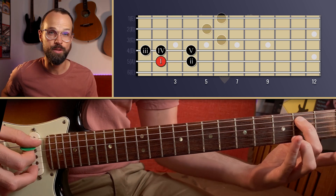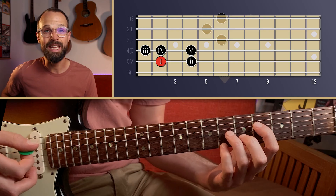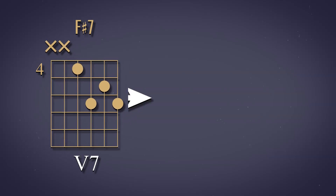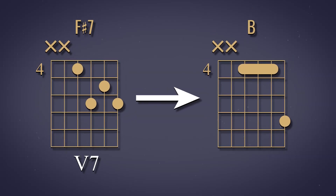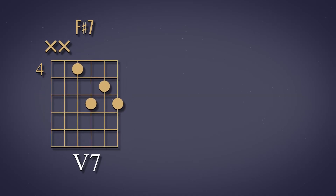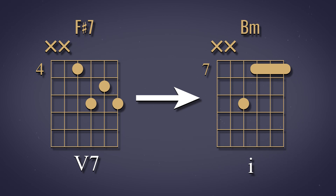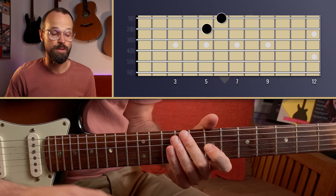It wants to resolve to the note of B, the B major chord. Interesting to know that you can also resolve a dominant seventh to a minor chord, so this could also resolve to a B minor. You can see that also in a minor key.